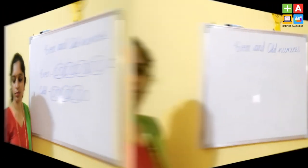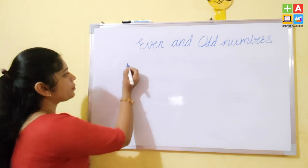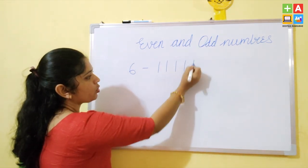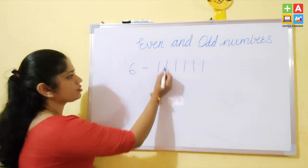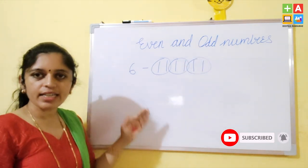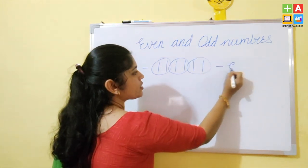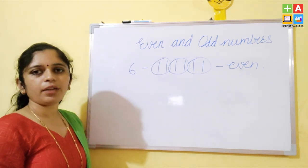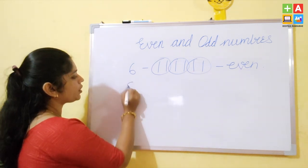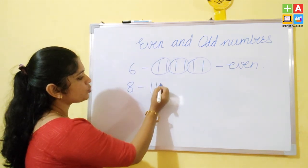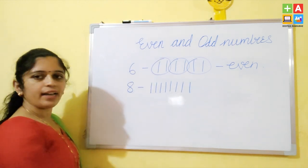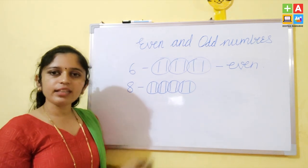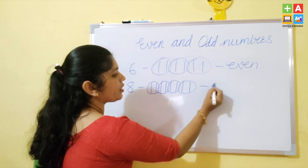I will explain by taking numbers. I am taking the number 6. For number 6, we will draw 6 lines: 1, 2, 3, 4, 5, and 6. Now we will make the pairs: 1, 2, 3. Anything left over? No. So number 6 is an even number. Now I am taking the number 8. I will draw 1, 2, 3, 4, 5, 6, 7, and 8 lines. Making the pairs: 1, 2, 3, and 4. Anything remaining? No. So number 8 is also an even number.